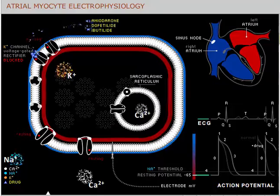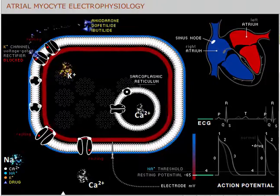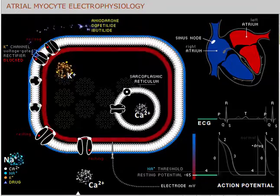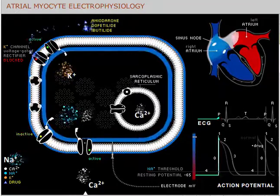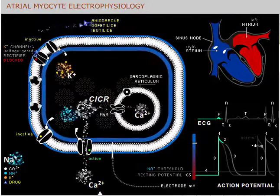Amiodarone, dofetilide, and ibutilide are class 3 antiarrhythmic agents that prolong action potential duration, primarily through effects on blocking potassium efflux through the delayed rectifier potassium channel, known as IKr.